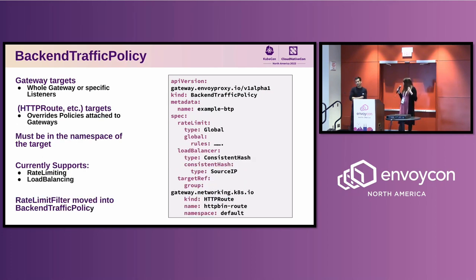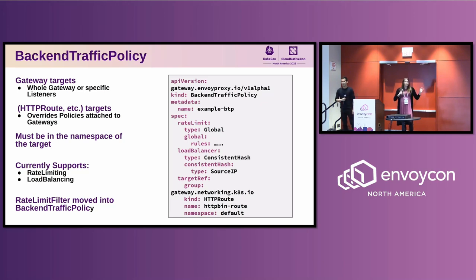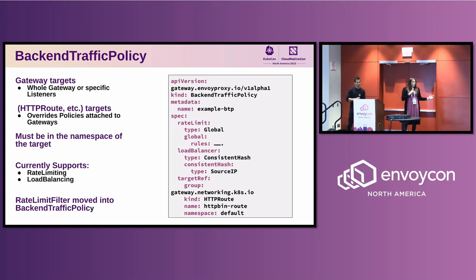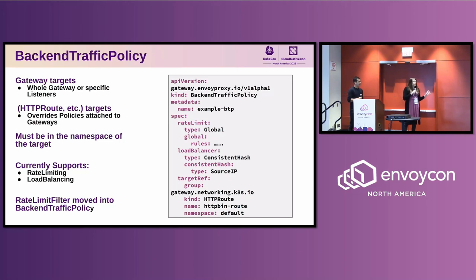The next resource is called the Backend Traffic Policy. This covers configuration about how Envoy proxy talks to your backend services, as well as configuration that might be route-dependent. As you saw earlier, we took our previous rate-limiting filter resource and folded it into this policy resource. So you can configure rate limiting here just as you could in previous versions using that filter — all of that same config now lives here.